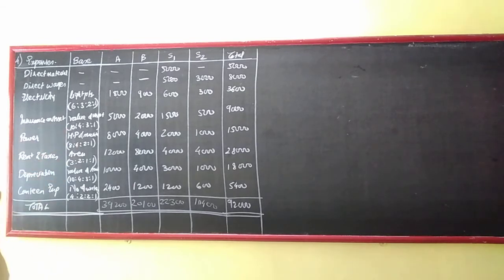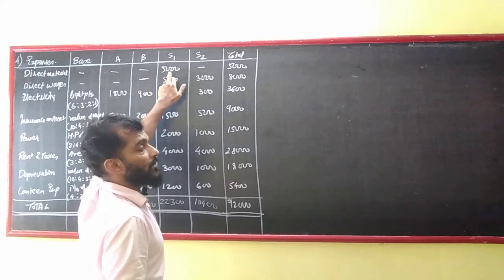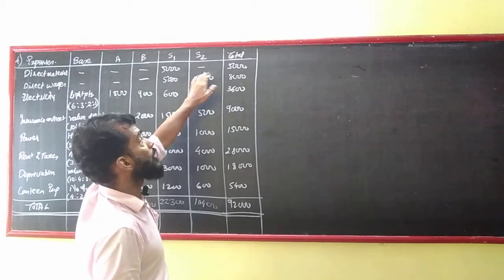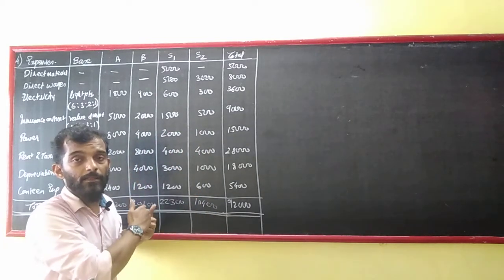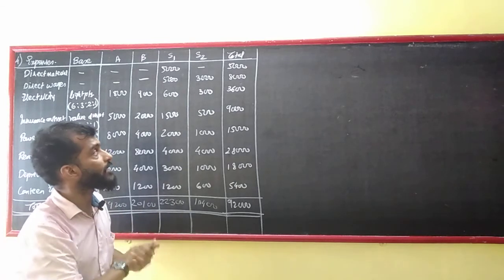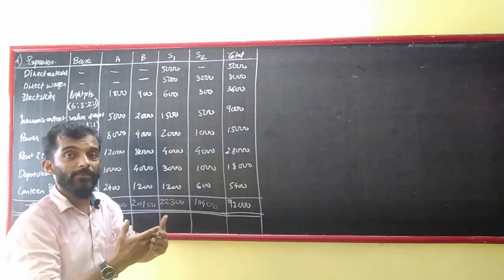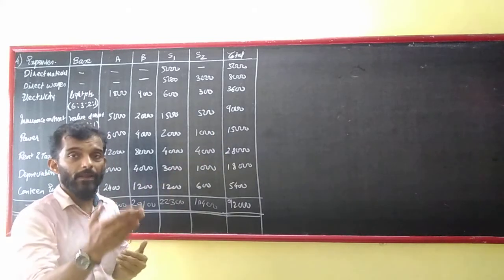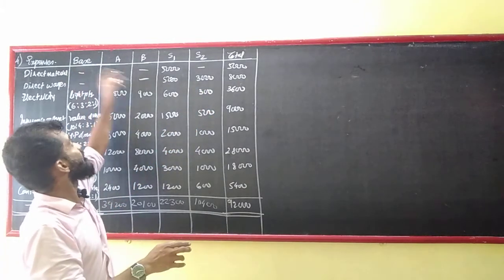The direct data will come in your calculation. Direct material having 5000 only for S1. If you have A or B or S2, why is there direct material? Because they are directly in the service department — they are already in the production department, so we will consider it as an overhead only for service.